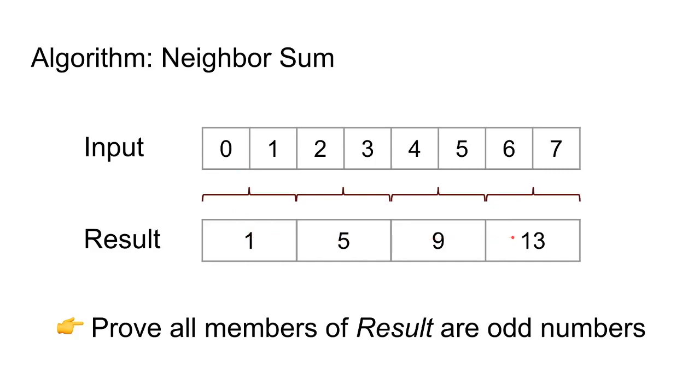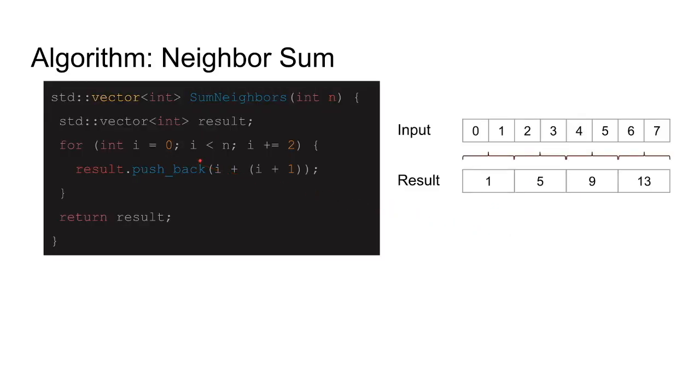Before I show you the proof, let's see an implementation of this algorithm. I implemented this in C++, but it doesn't really matter what language you implement it in. As an input we have n, which is the value or number of numbers that we want - from 0 to 7 in this case, n is 8.